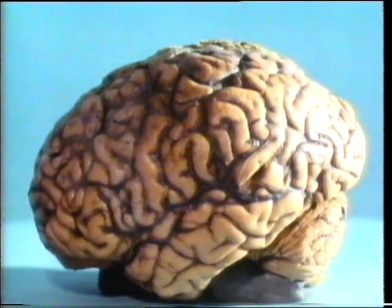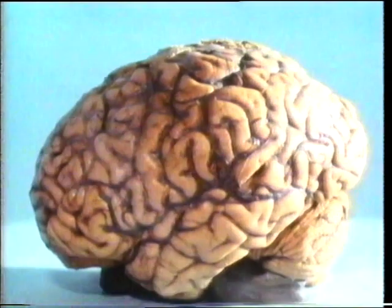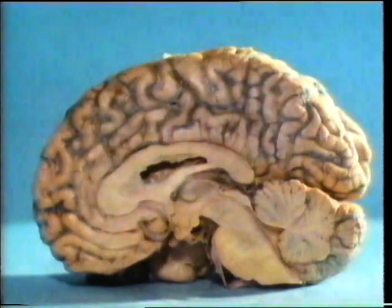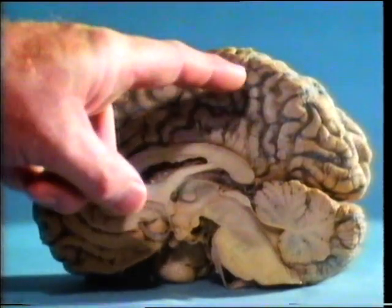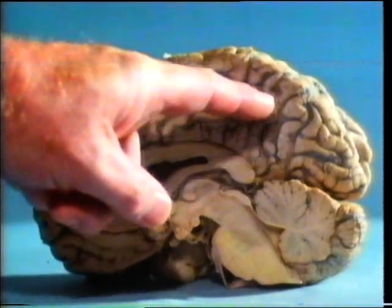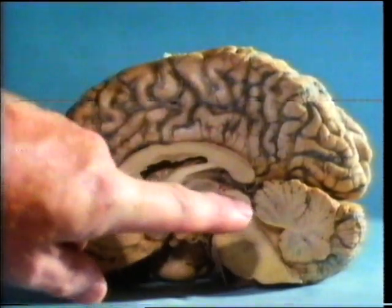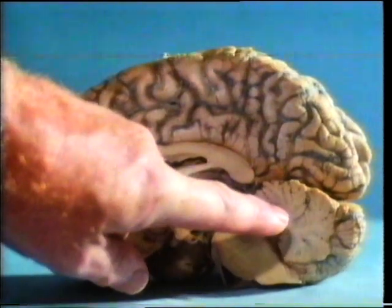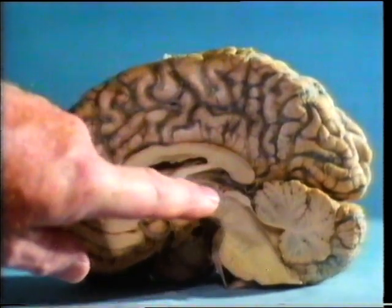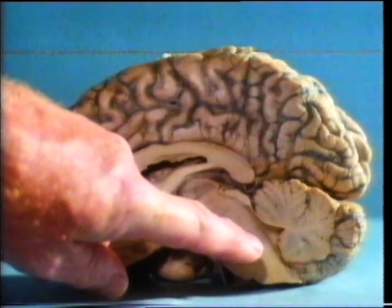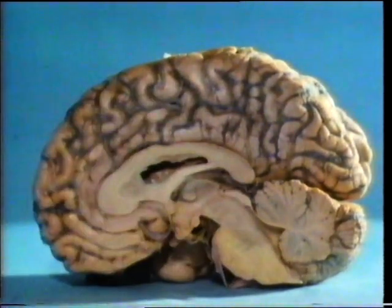The brain is an extremely complicated organ, but we do know some things about it. The cerebrum — the folded area — is the thinking part of the brain, highly developed in man. The cerebellum has a lot to do with activities we don't have to think about, like keeping our balance, for example. And there's the brain stem, the connection to the spinal cord.